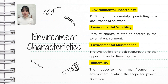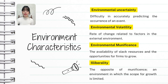Lastly, environmental turbulence describes how much and how quickly things change in a company's external environment, as well as how many different factors are at play. If a business faces frequent changes and many different challenges from various sources — like shifting market trends, new regulations, and economic fluctuations — that's high environmental turbulence.